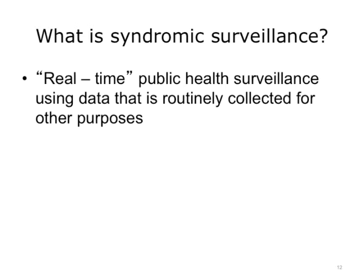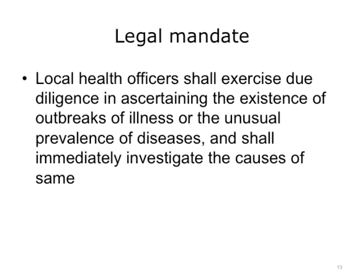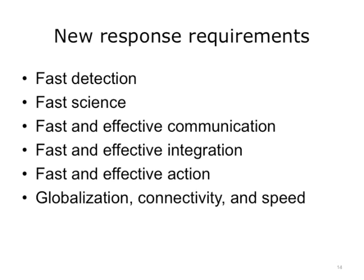Syndromic surveillance is an example of HIT applied to public health practice. It is defined as real-time public health surveillance using data that is routinely collected for other purposes. Public health has a long-standing legal mandate to conduct surveillance. Following the events of September 11, new requirements for surveillance have emerged — requirements for fast detection to respond to the threats of bioterrorism and emerging diseases.